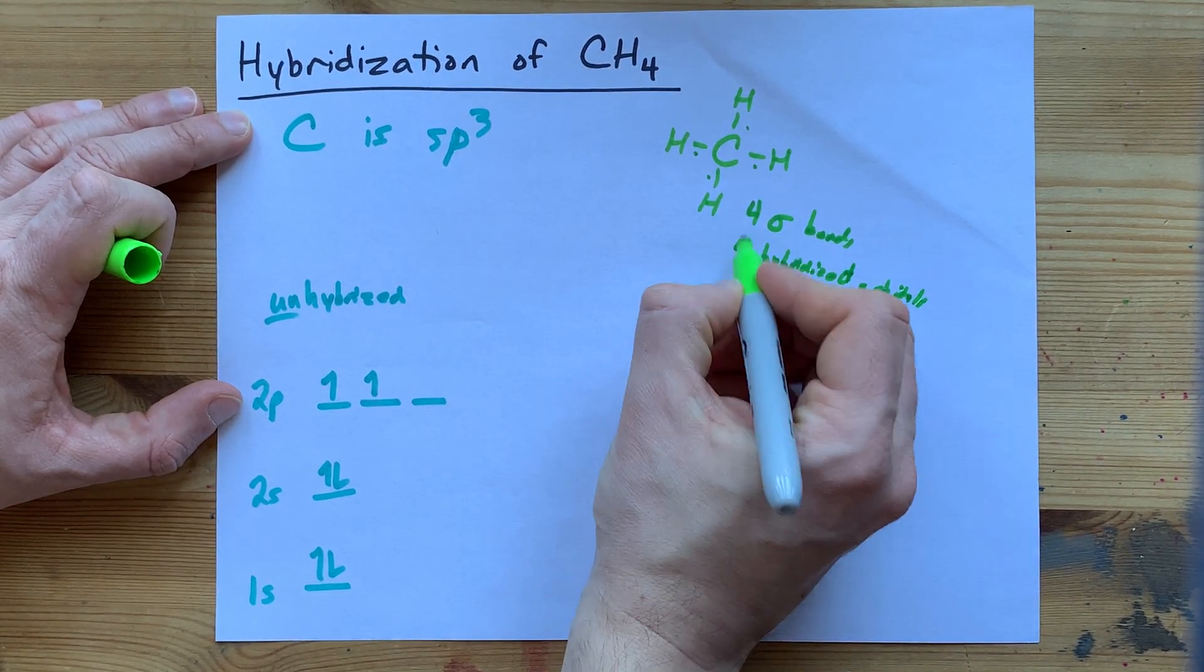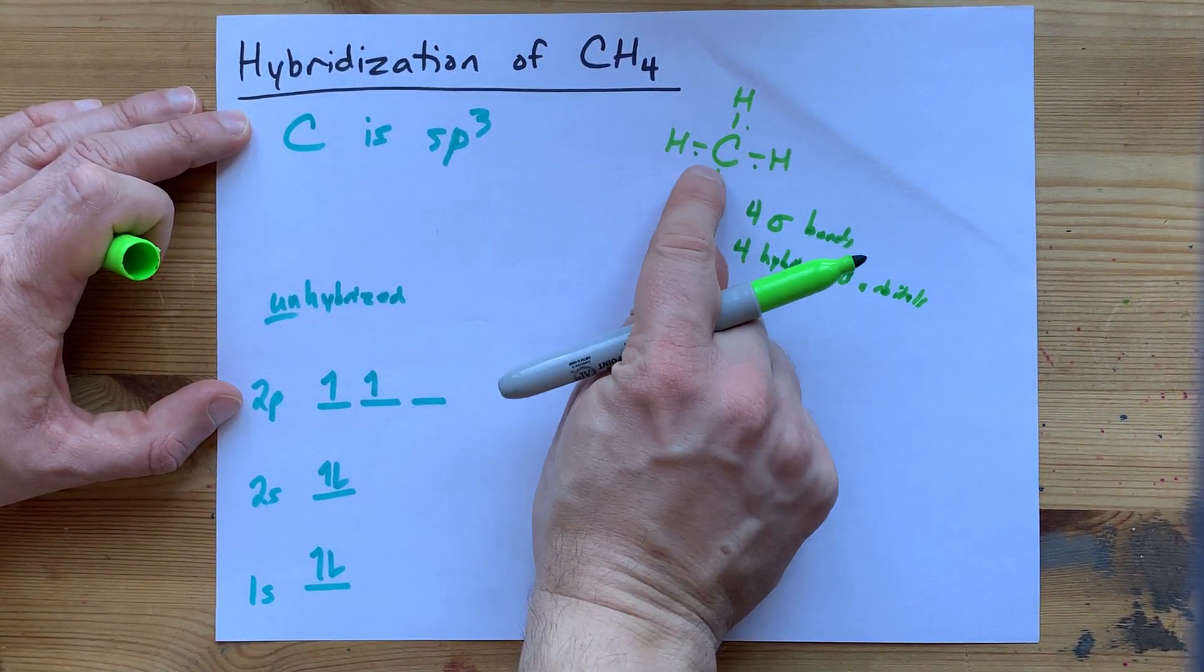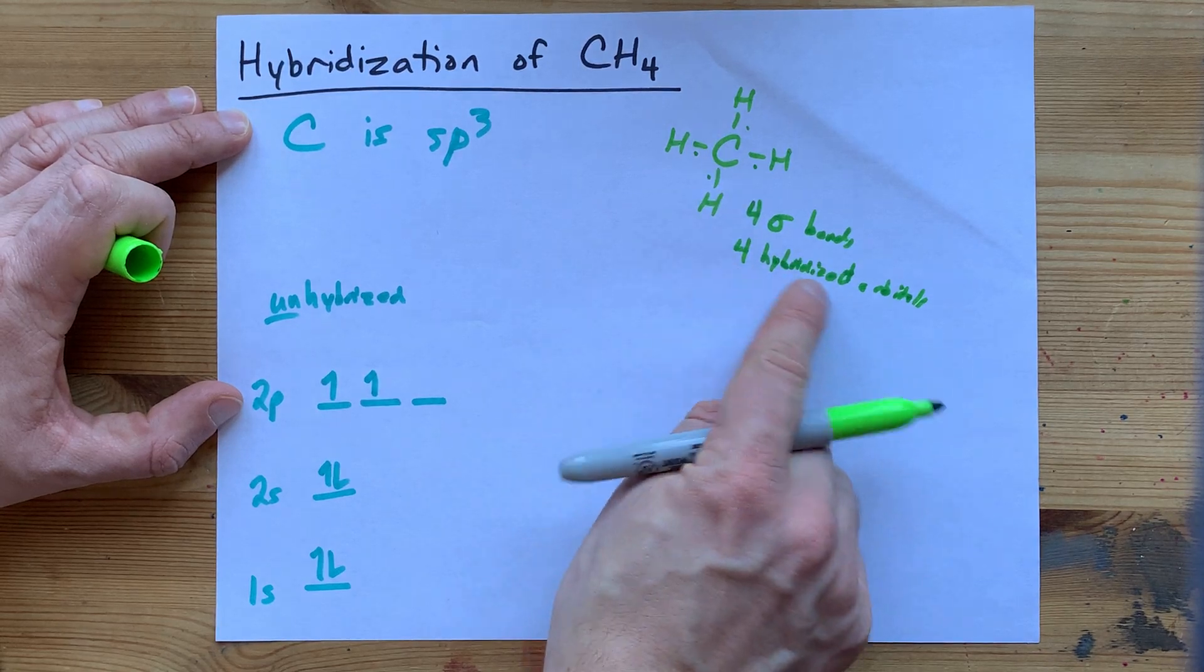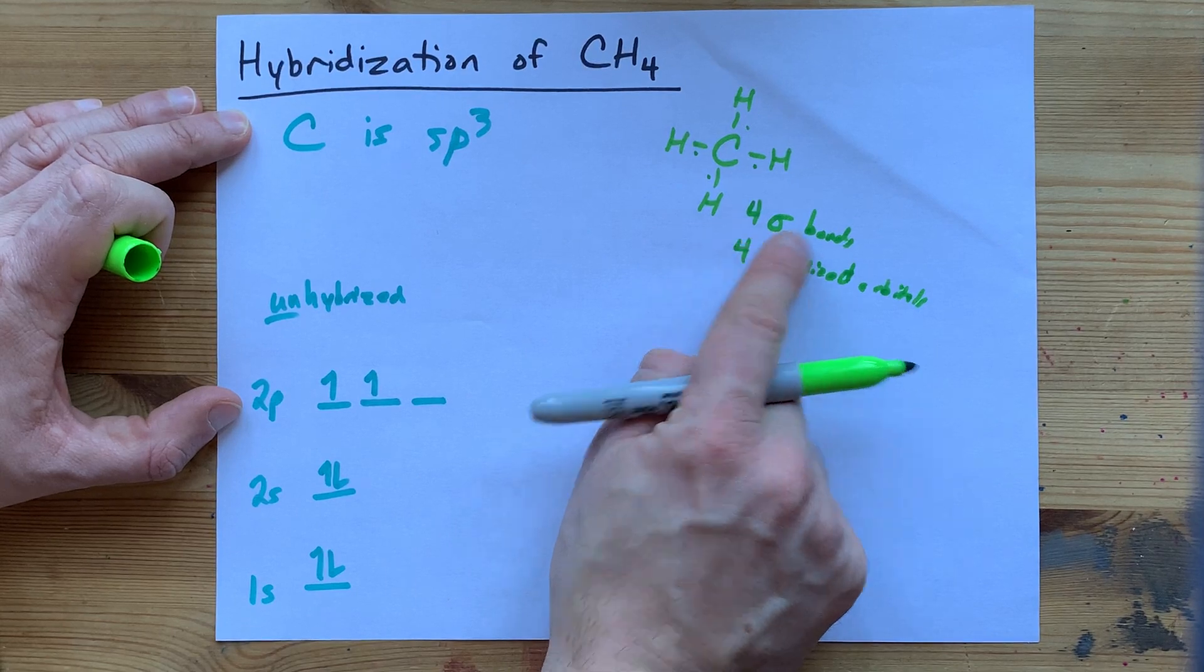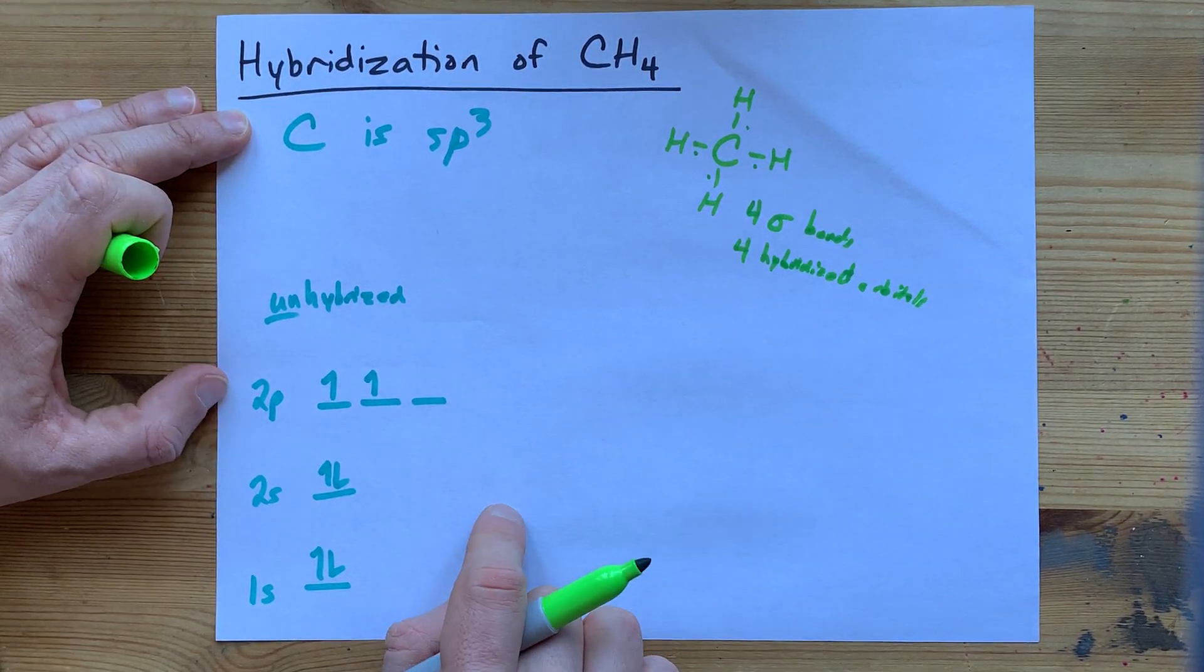It's not always the exact same number. Lone pairs that were on this central atom would have also been in a hybridized orbital. But there's no lone pairs on carbon. So, four sigma bonds, four hybridized orbitals.